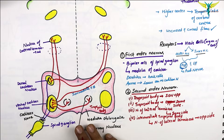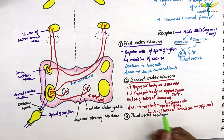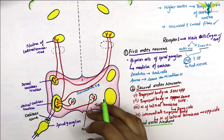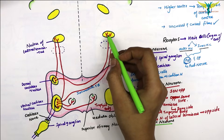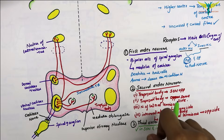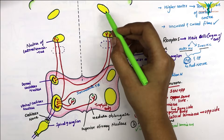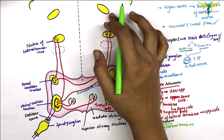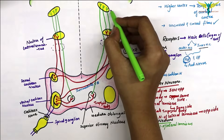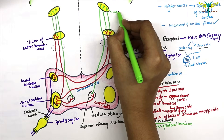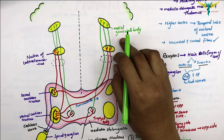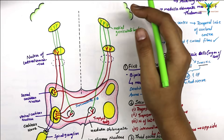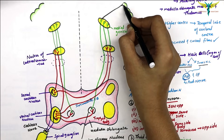The third order neurons are present in the superior olivary nucleus and in the nucleus of the lateral lemniscus. These fibers end up in the medial geniculate body of the thalamus, which forms the subcortical auditory center. The fibers from the medial geniculate body then go to the temporal cortex via the internal capsule as the auditory radiation.